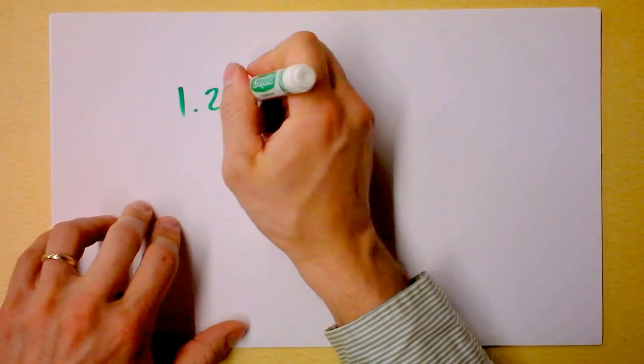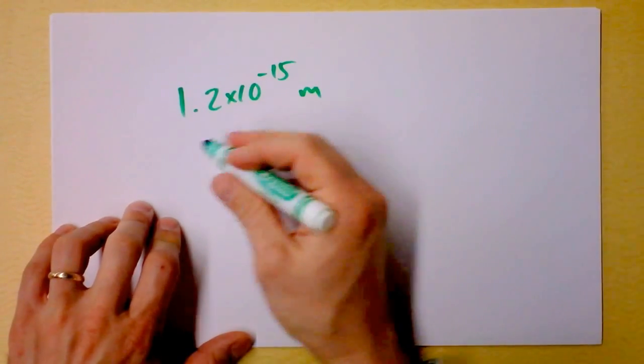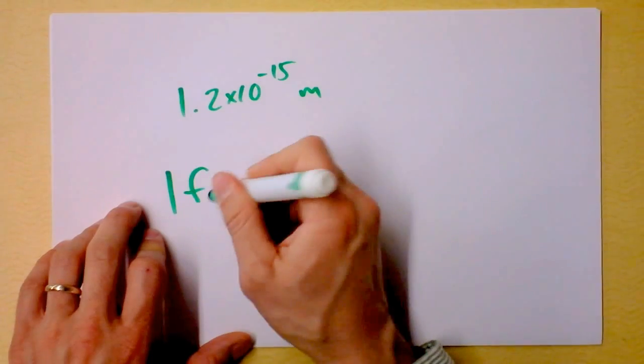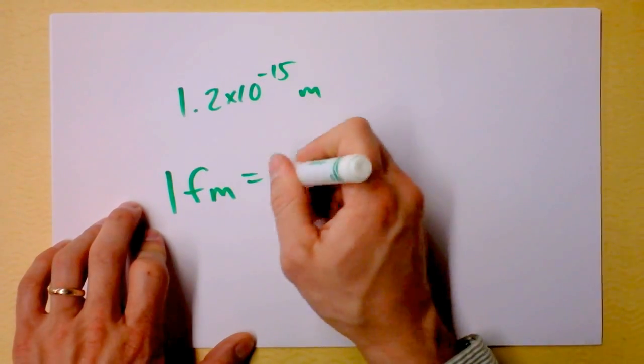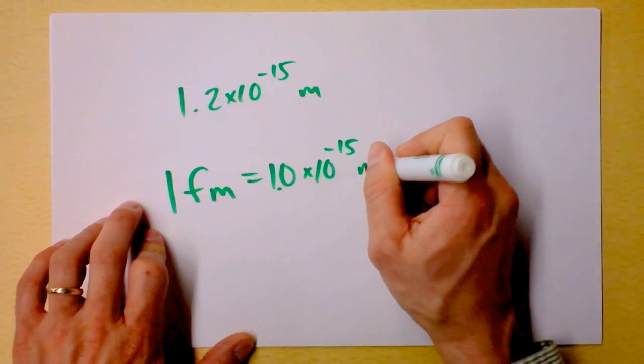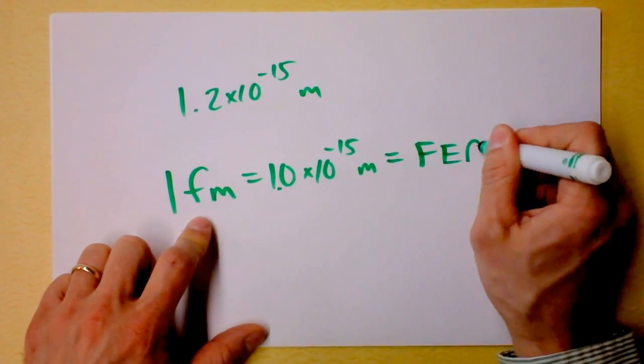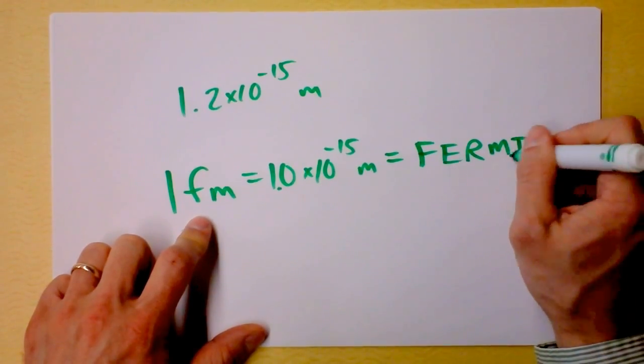And then I will introduce a new unit. Remember we had this 1.2 times 10 to the negative 15th meters. I'm thinking that we should introduce a femtometer. One femtometer is 1.0 times 10 to the negative 15th meters. That's just so handy that it's an F right there, because I'm going to call it a Fermi after the great Italian physicist Enrico Fermi.